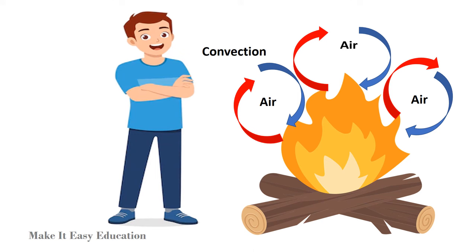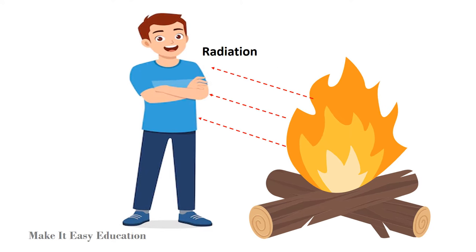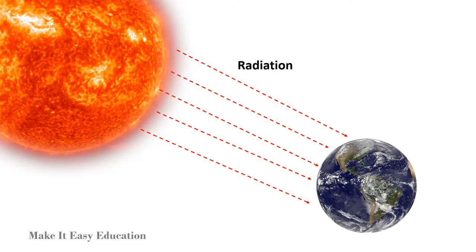Suppose you're standing near a campfire. You can feel the heat from the fire because it warms the air by convection. But you can also feel the heat from the campfire because it warms you directly through radiation. Heat from the sun travels through space and heats the earth by radiation.